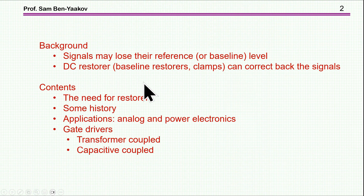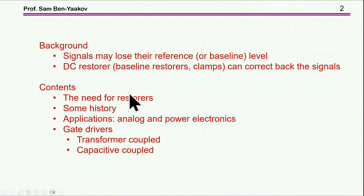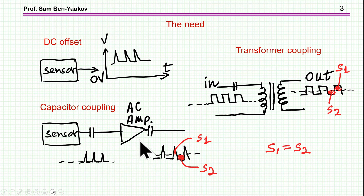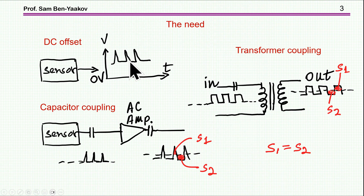Let me say a few words about the background. Signals may lose their reference — that is, the baseline or the zero level — and the DC Restorer is a circuit that can correct the signal back so it will be referred to zero or any other reference level. Signals coming out of sensors may have a DC offset, which is not of interest and in fact is interfering, so there is a need to bring the baseline back to zero.